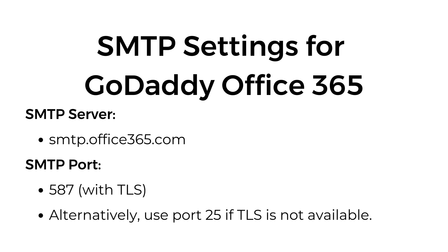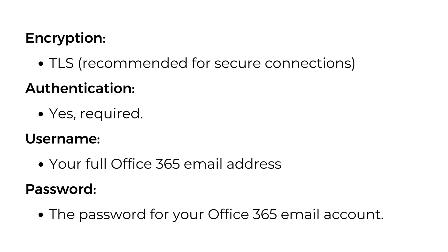SMTP server: smtp.office365.com. SMTP port 587 with TLS. Alternatively, use port 25 if TLS is not available. Encryption: TLS, recommended for secure connections. Authentication: yes, required. Username: your full Office 365 email address. Password: the password for your Office 365 email account.